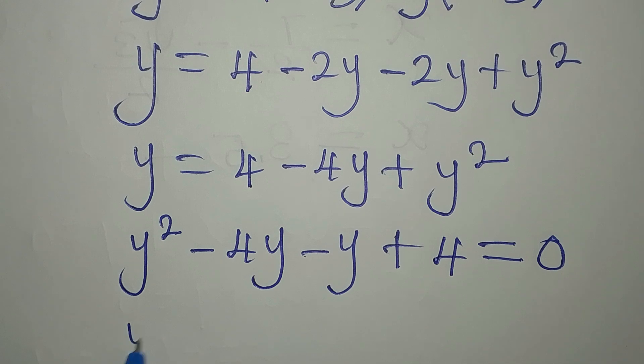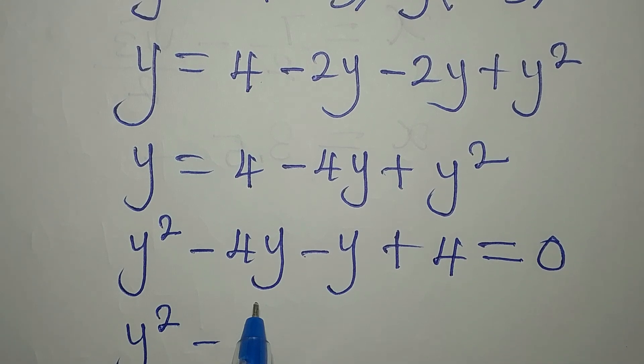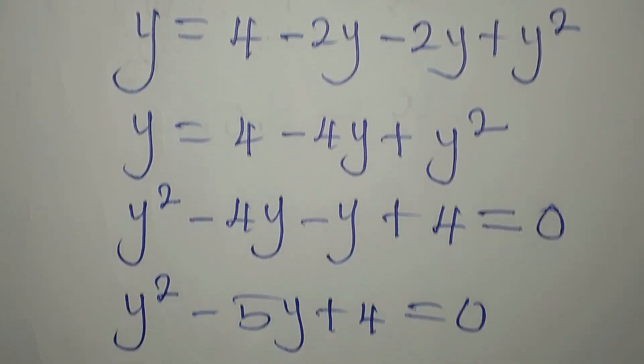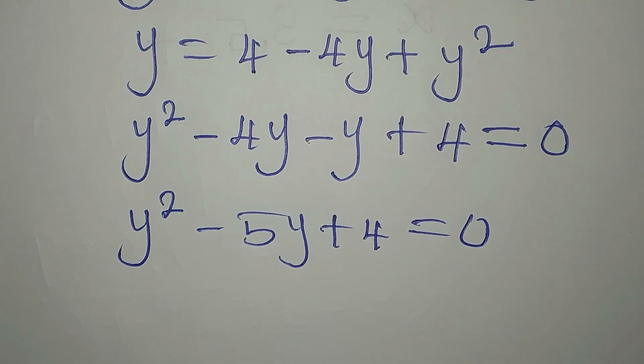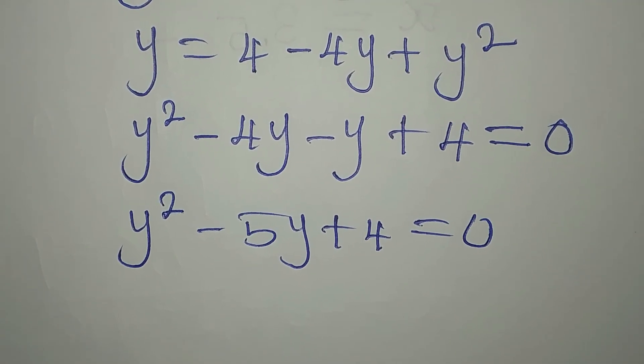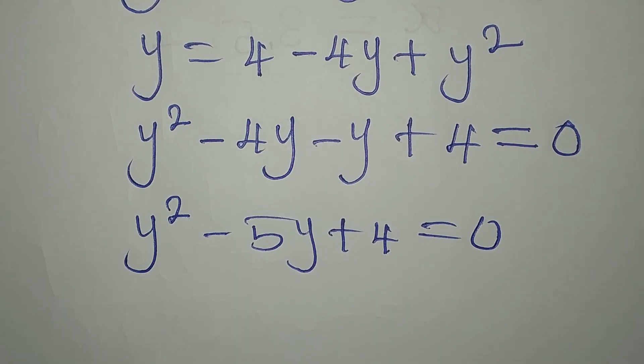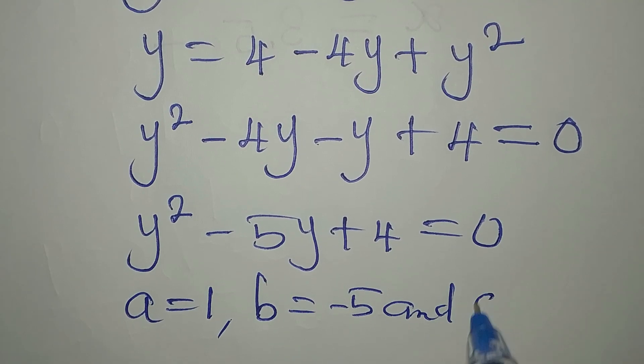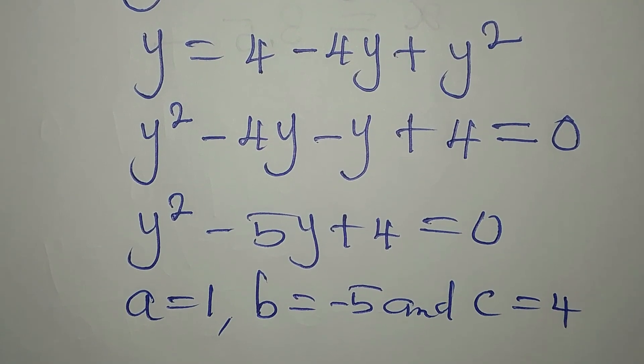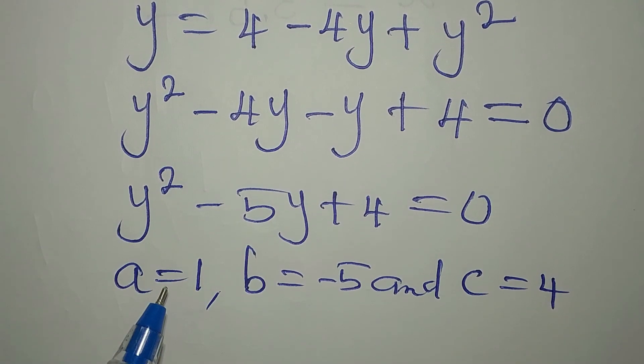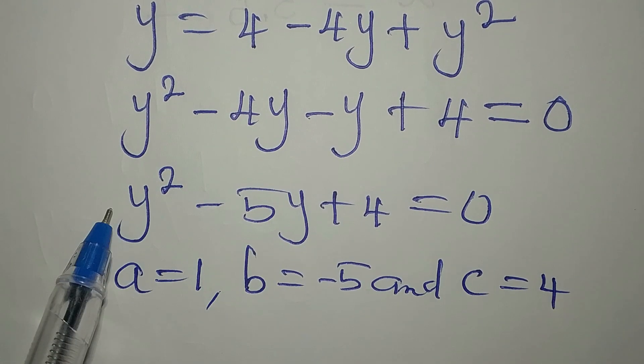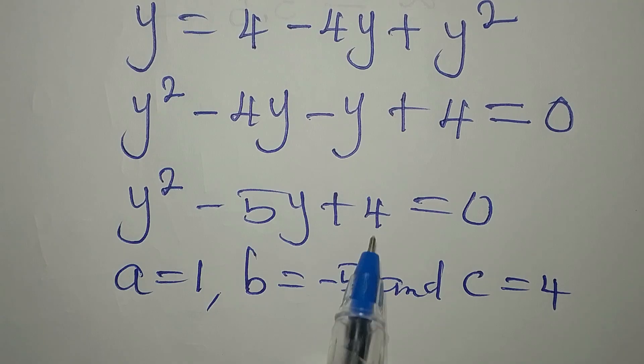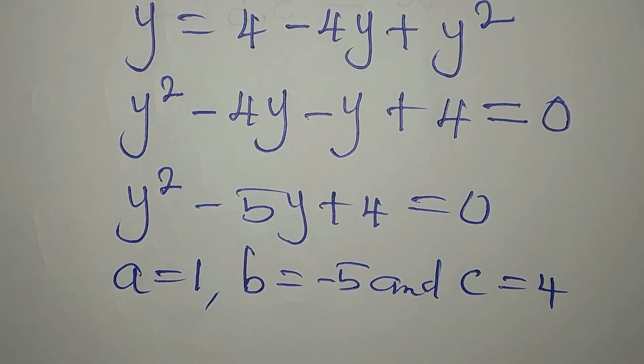Now, from here, we have y squared minus, put these two together, you have 5y. Then, plus 4 equals 0. And I still want us to solve this using the formula, quadratic formula. To use the formula, you have to know your value of ABC. A is 1, B is minus 5, and C is positive 4. A is the coefficient of the first variable, which is y squared. B is a coefficient of y, that's minus 5. And C is the only constant in the equation.